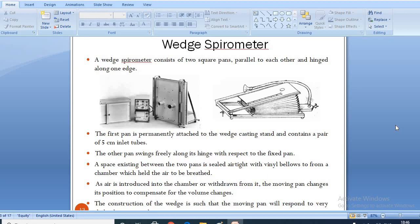As air is introduced into the chamber or withdrawn from it, the moving pan changes its position to compensate for the volume changes. The construction of the wedge is such that the moving pan will respond to very slight changes in volume. The transducers are attached to the fixed frame and are coupled to the edge of the moving pan. One transducer produces a DC signal proportional to displacement or volume while the other has a DC output proportional to velocity or flow. The transducer outputs are connected to an electronic circuit which contains the power supply, an amplifier and the built-in calibration networks.